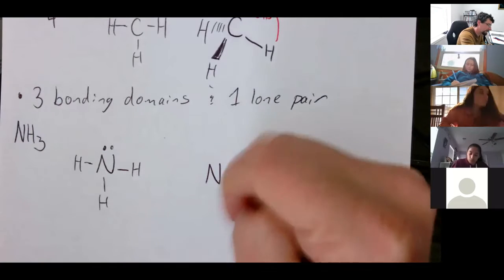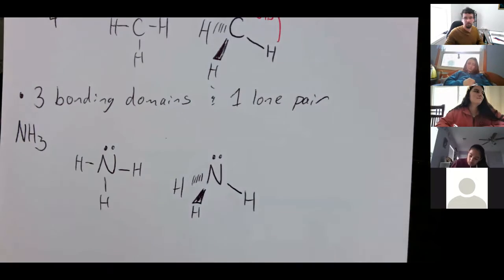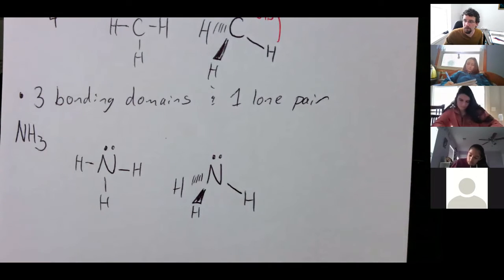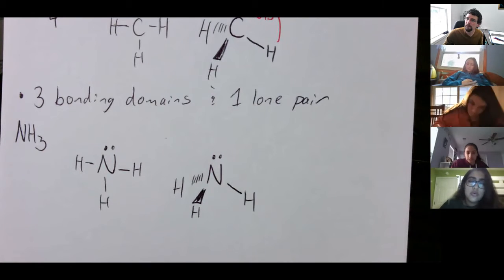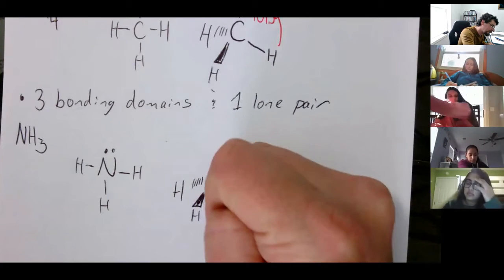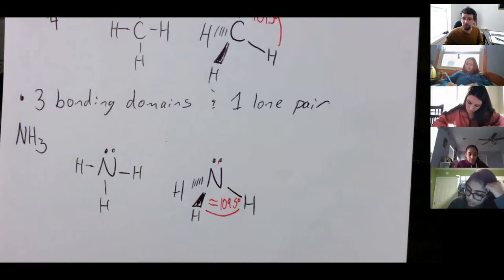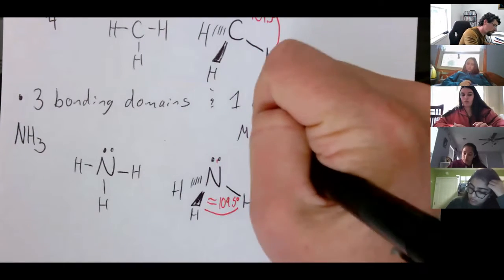Let's try to draw ammonia in three dimensions. What are the bond angles between any of the hydrogens? It's going to be approximately 109.5. It changes a little bit because the lone pairs repel slightly differently than these localized bonds, so we say approximately 109.5. Does anybody know what the shape of this molecule is? Trigonal pyramidal — yep, trigonal pyramidal.